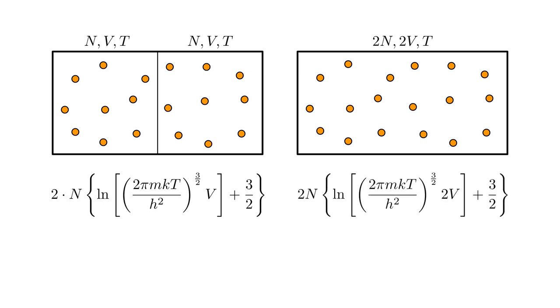The entropy should be the expression at left without the factor of two in front, with N replaced by two N and V replaced by two V. Here's the problem: this entropy is greater than the previous value. They share a factor of two N in front, but the right expression has an extra factor of two in the argument of the logarithm.